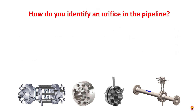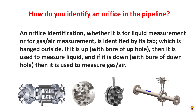How do you identify an orifice in the pipeline? An orifice identification — whether it is for liquid measurement or for gas and air measurement — is identified by its tab which hangs outside. If the bore hole is up, then it is used to measure liquid. If it is down, with the bore hole down, then it is used to measure gas or air.